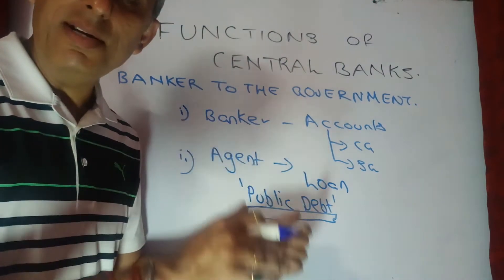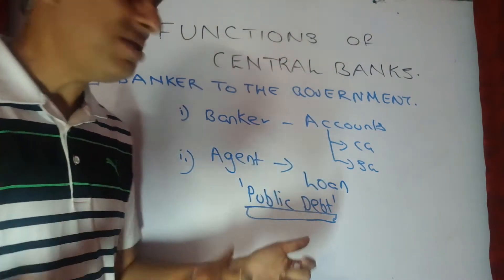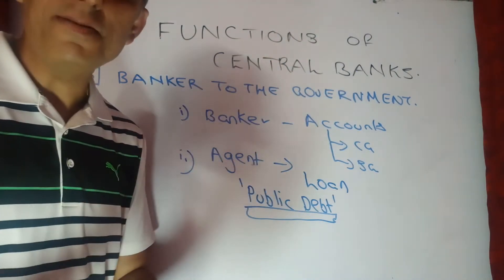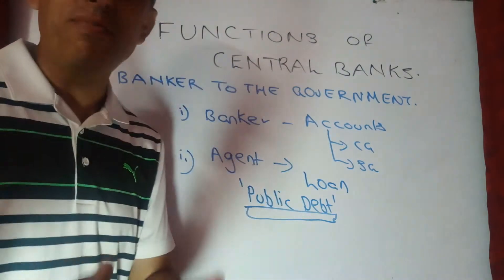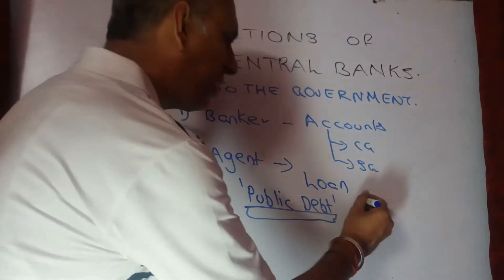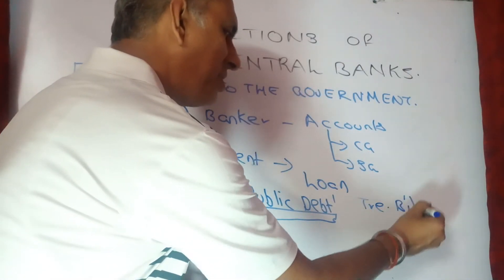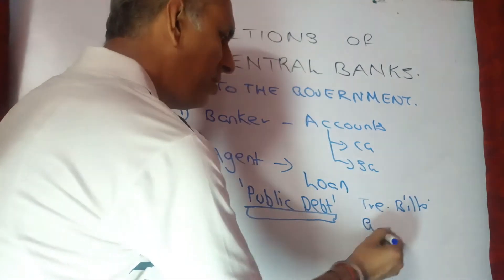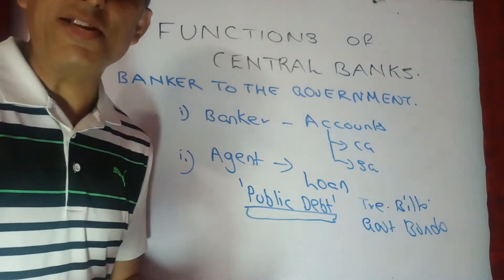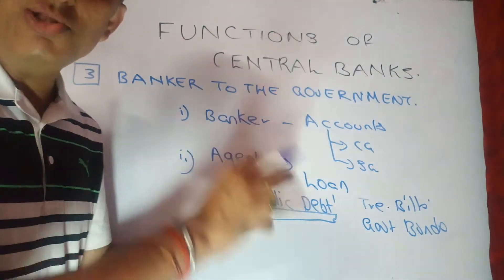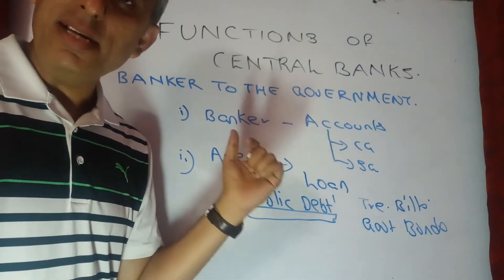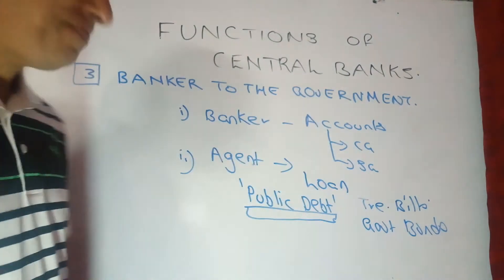Since the government has comparatively less revenue than expenditures, they have to raise funds. The central bank, RBI, helps the government raise those funds by issuing a variety of securities on behalf of the government. These securities can be treasury bills — which are short-term — or government bonds, which are long-term in nature. So the second job is managing public debt as an agent.